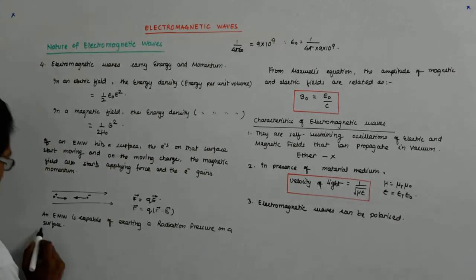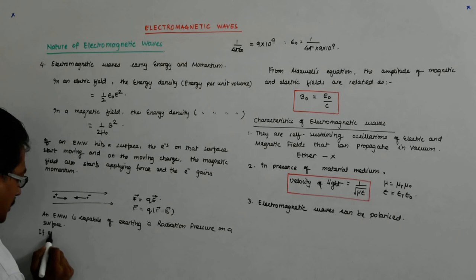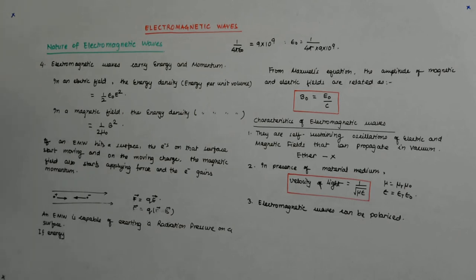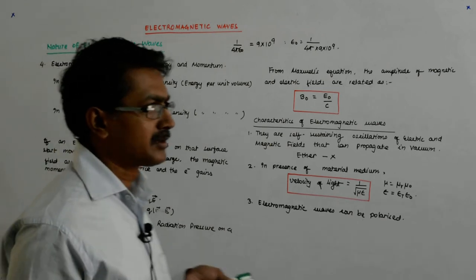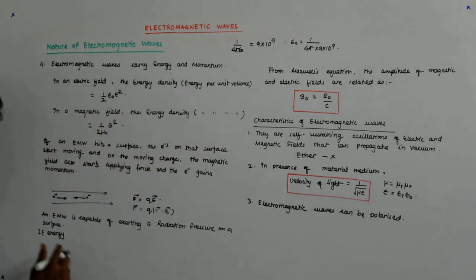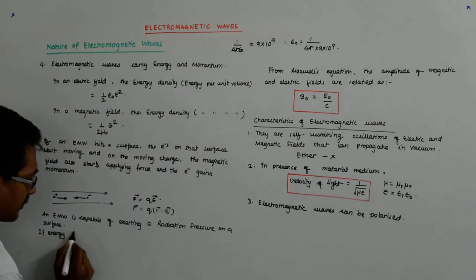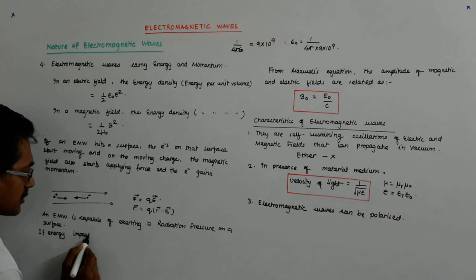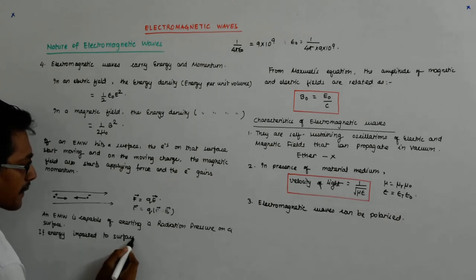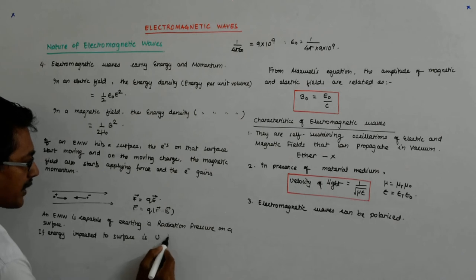Now, if, so, if light is incident on a metal, then it applies to pressure? Yeah, it applies, yes. If the intensity starts becoming more, then you can actually see that pressure and you can also feel that pressure. If energy imparted to a surface is u in time t, the momentum gained by it becomes p is equal to u upon c.